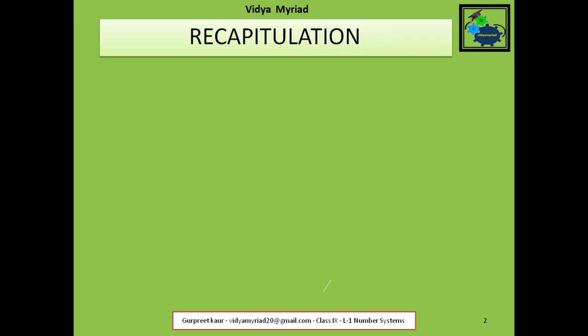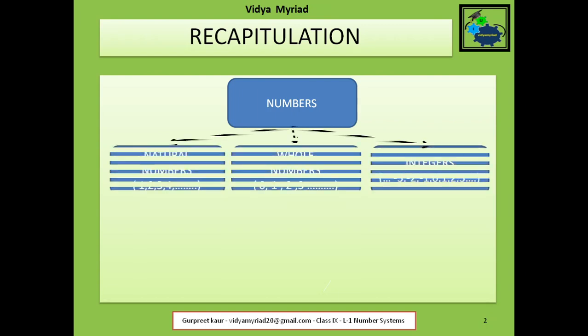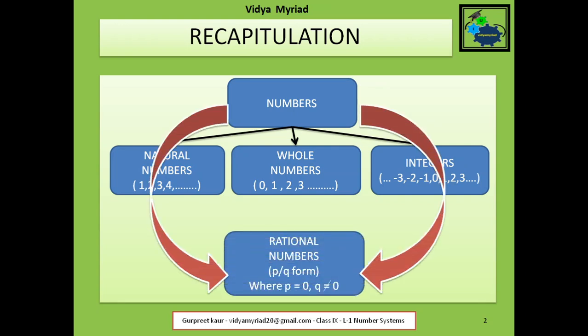Let us recapitulate about what are numbers. All the digits 1, 2, 3, 4 are considered as numbers. There are various types of numbers which you have already studied in your lower classes. There are natural numbers which start from 1, whole numbers which start from 0, and integers which have negative digits also.